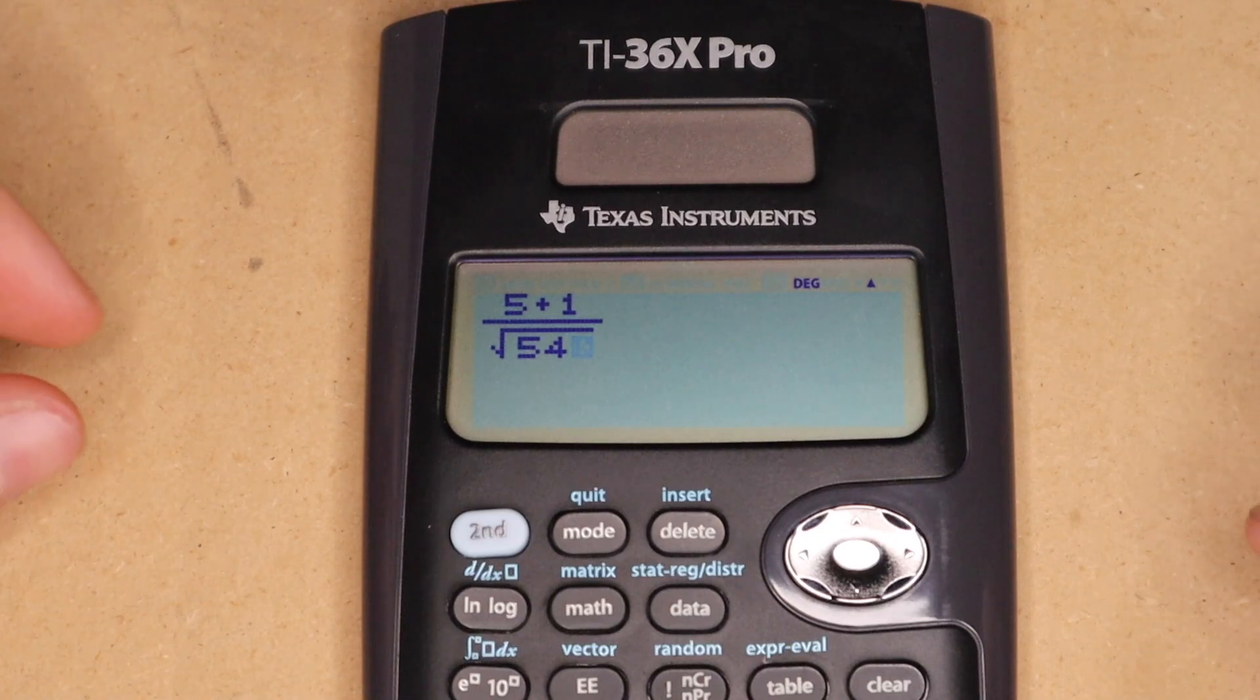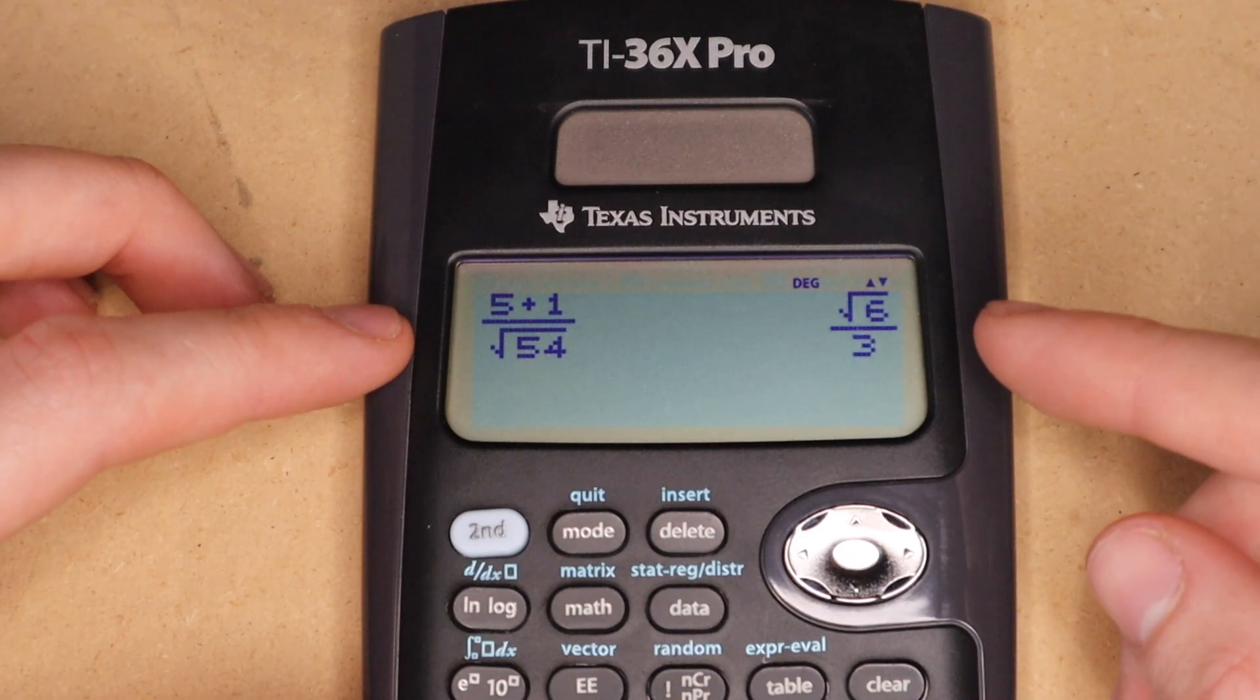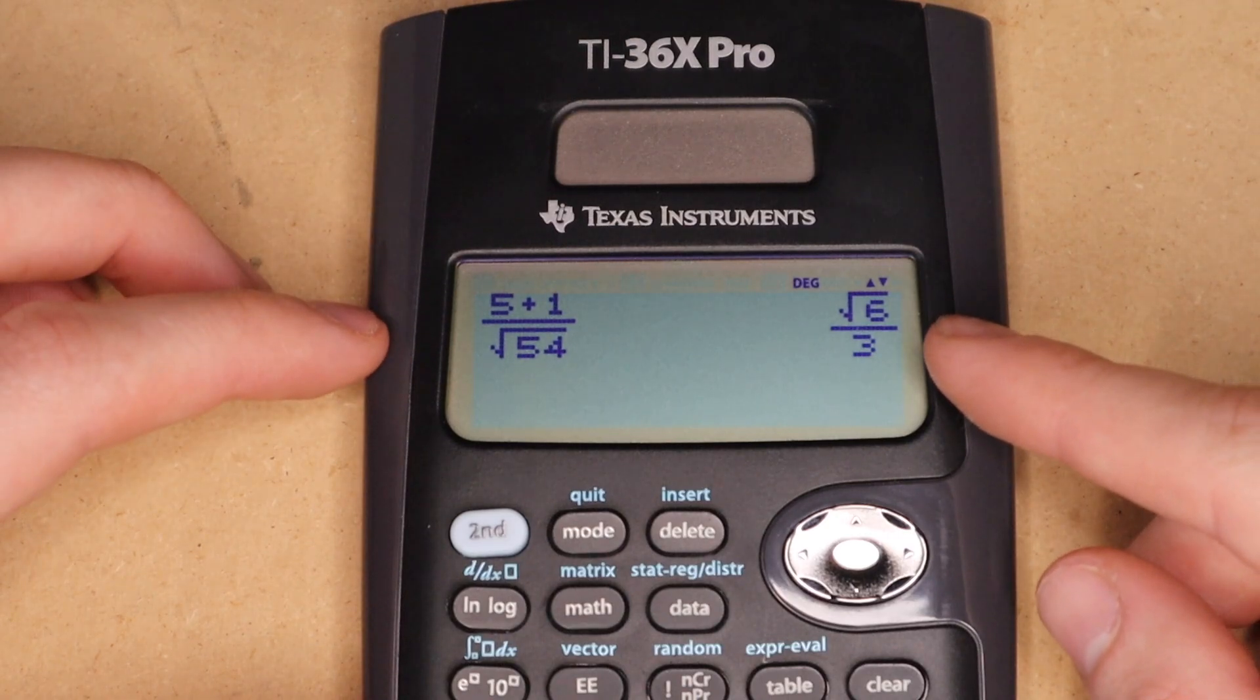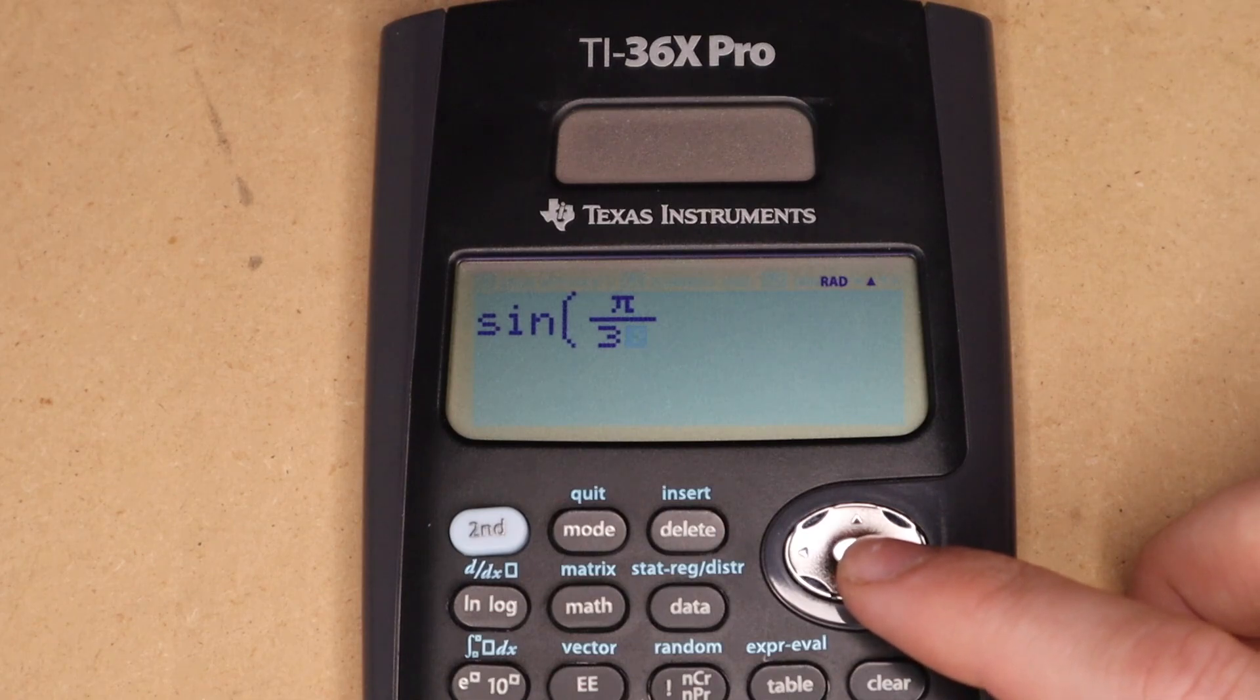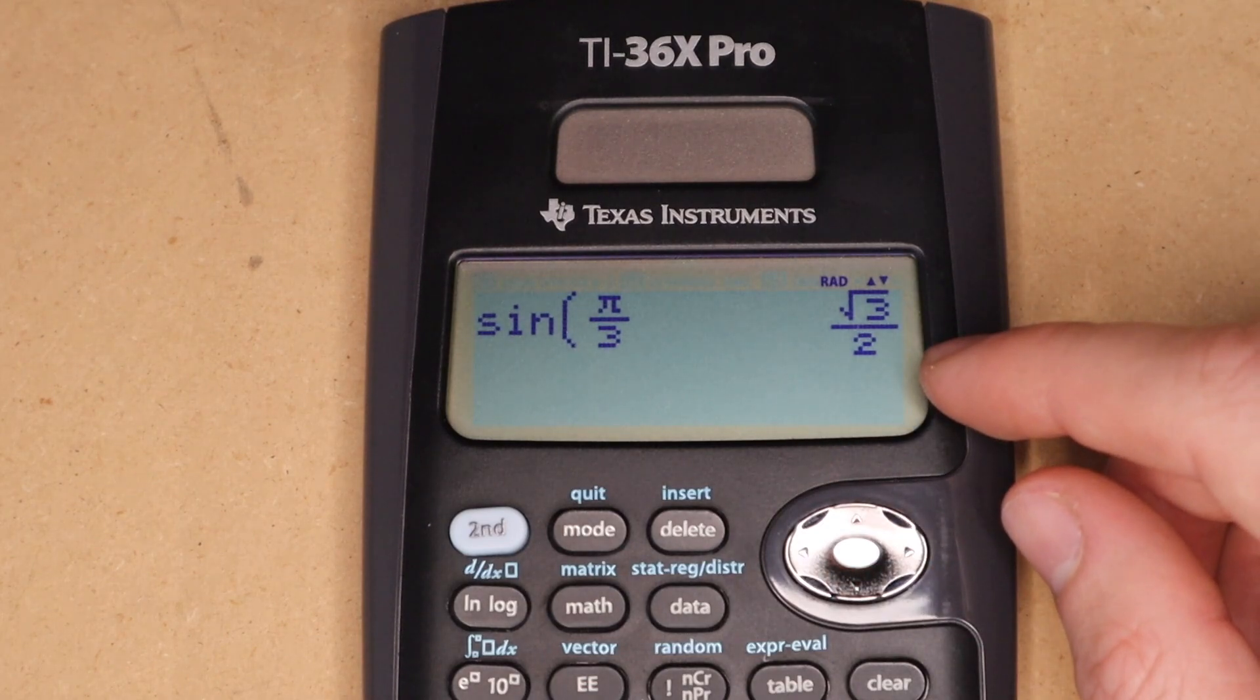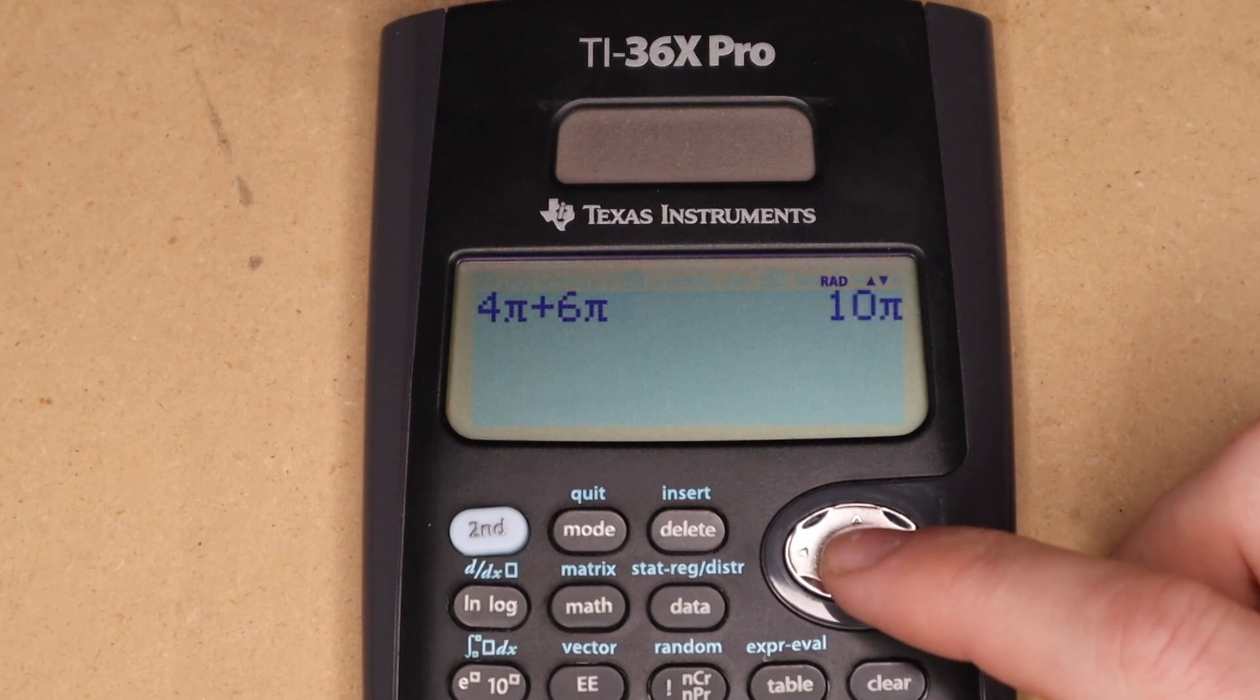And then in most situations, you will get the reduced exact form of your answer. So here I have five plus one over the square root of 54, and you can see it reduces the fraction and reduces the square root to get the simplest answer in exact form. So this works in quite a few cases, including common trig values. So you can see here sine of pi over three gives me the exact value of square root of three over two. And four pi plus six pi gives me ten pi.